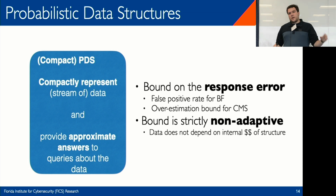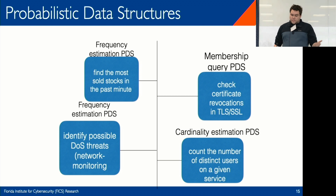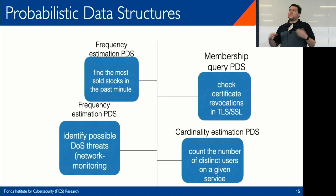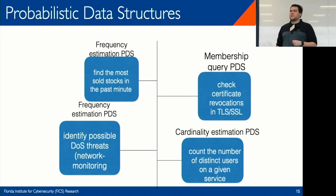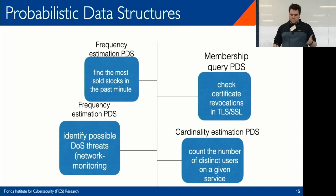The overestimation bound for the count-min sketch describes how far off the frequency estimation is from the true frequency. All these bounds are computed strictly in a non-adaptive manner, meaning the data collected does not depend on the internal randomness of the structure — which an adversary might not adhere to. These structures are used all over the place in instances where there is adversarial incentive: high-frequency trading systems, network monitoring systems, certificate revocation systems like CRL Lite.